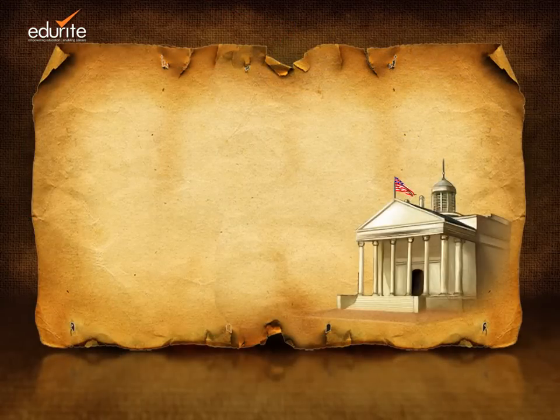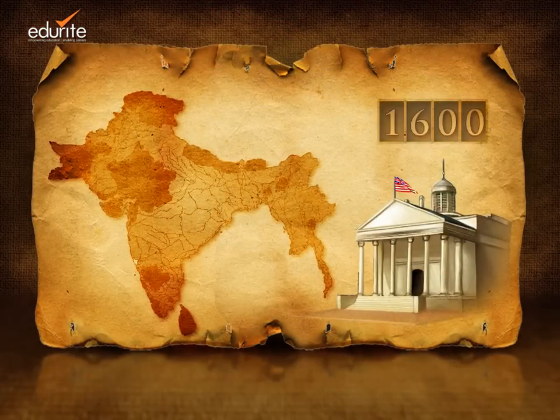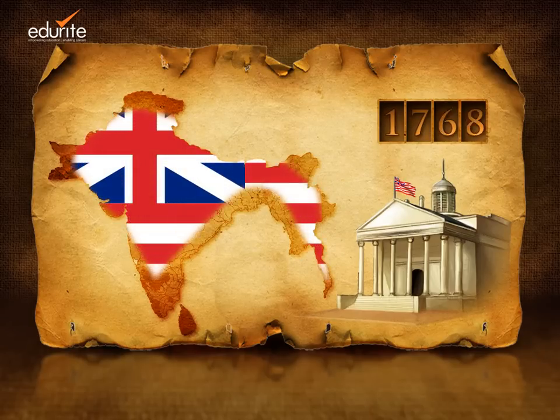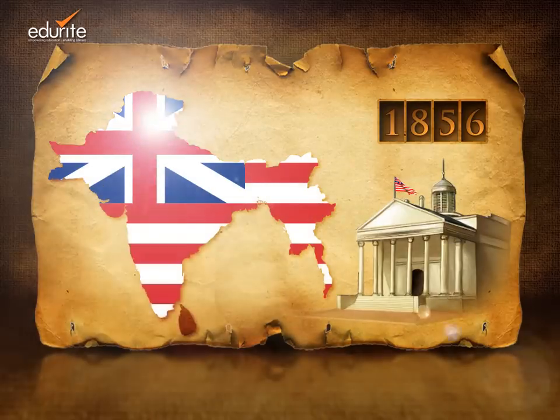Thus the traders who came to India in 1600 AD to trade took just over 250 years to become its supreme ruler.